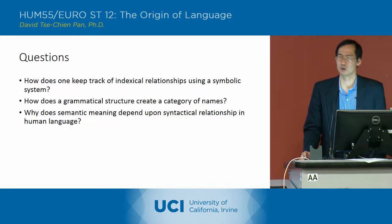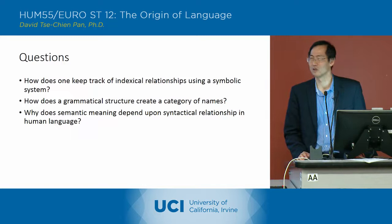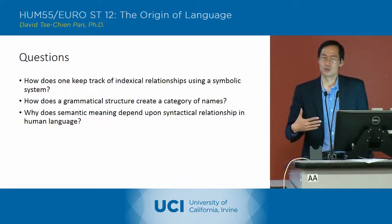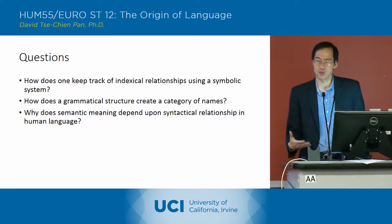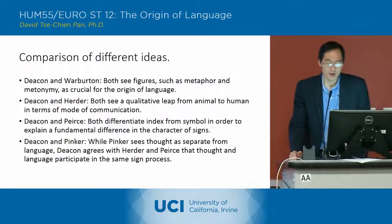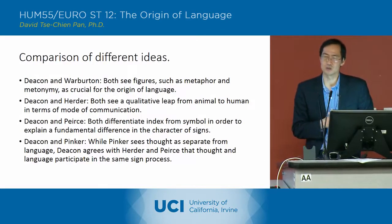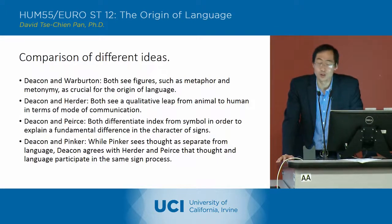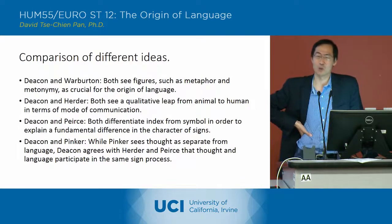So that was a short summary from the last part of the lecture. Now that we've gone through this first section about the way symbolic relationships function according to Deacon, I want to summarize how Deacon's ideas fit with the ideas of other thinkers we've encountered in the class. One interesting thing is that Deacon is taking up Warburton's notion — that language originates with figures, things like metaphors, metonymy, and similes.